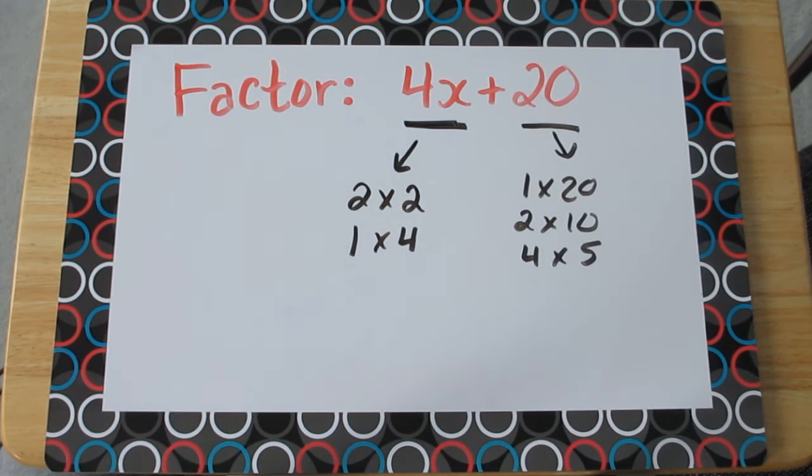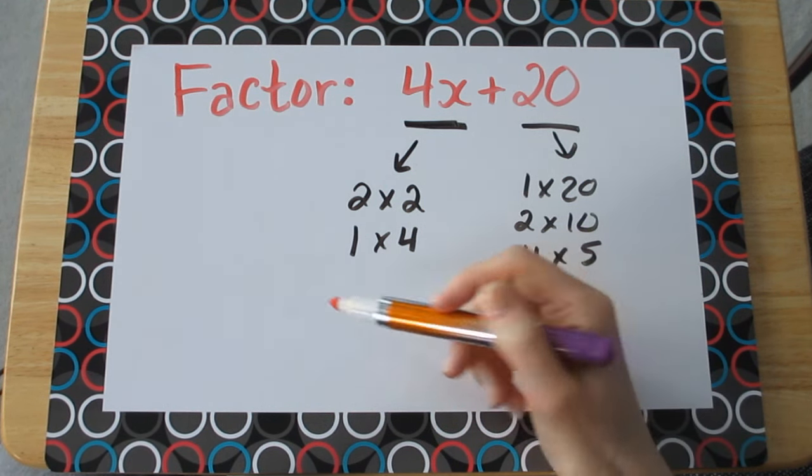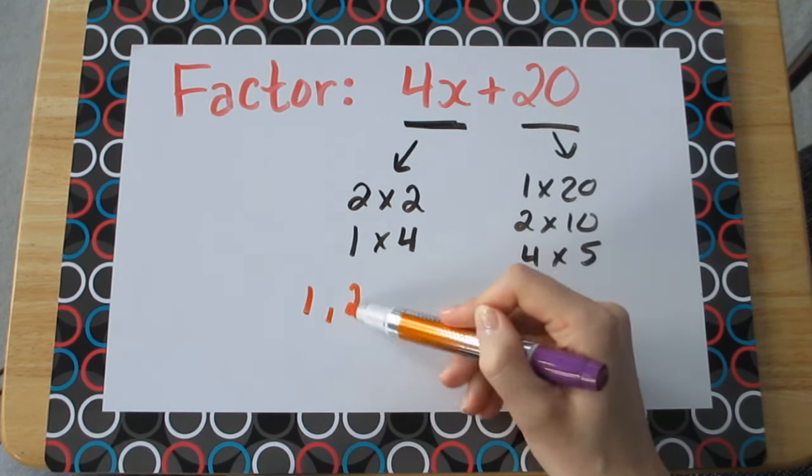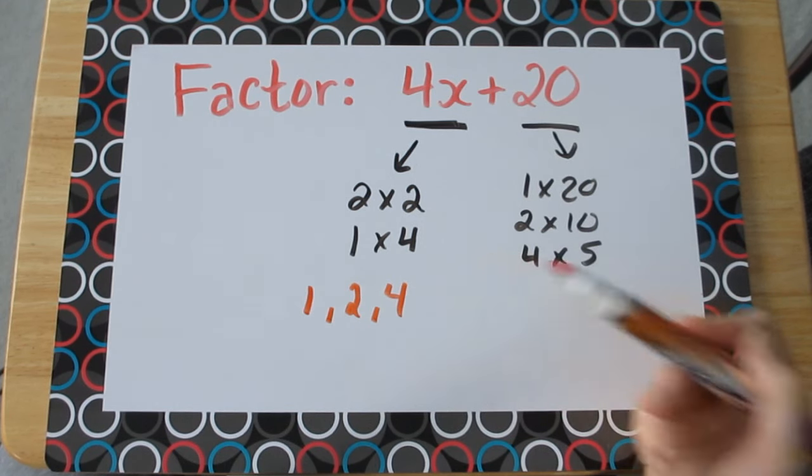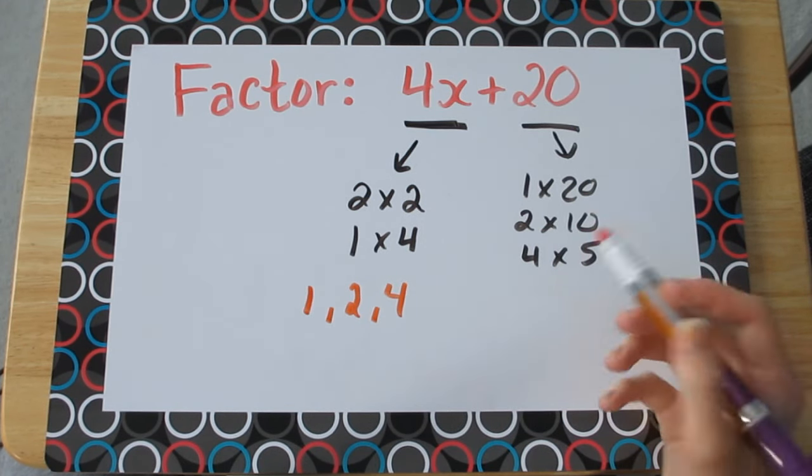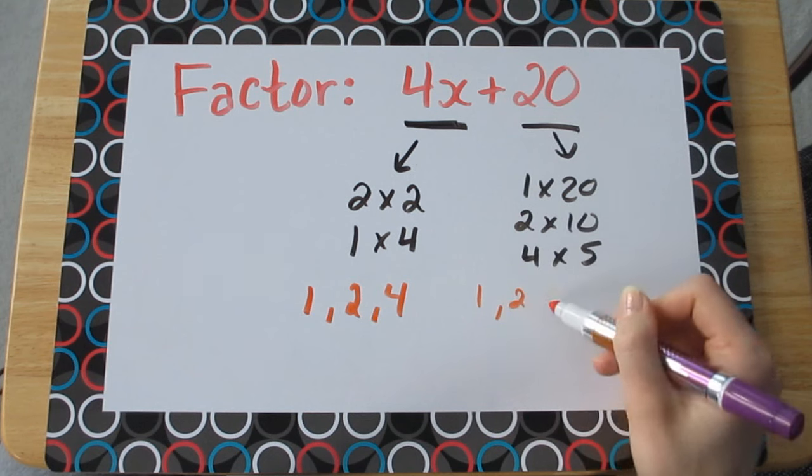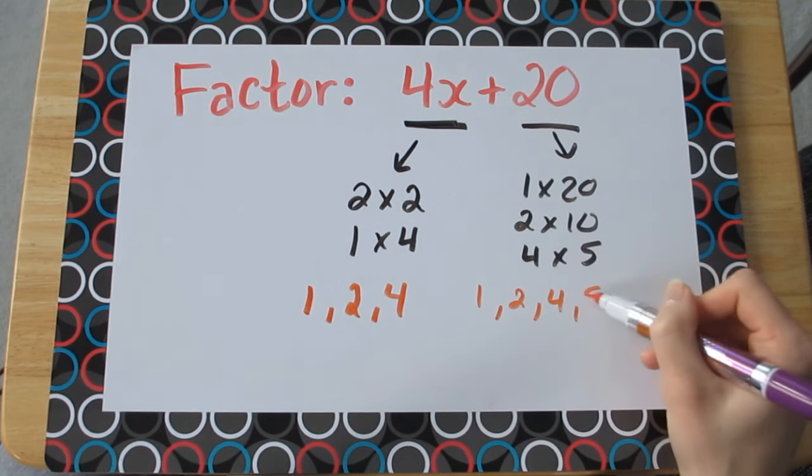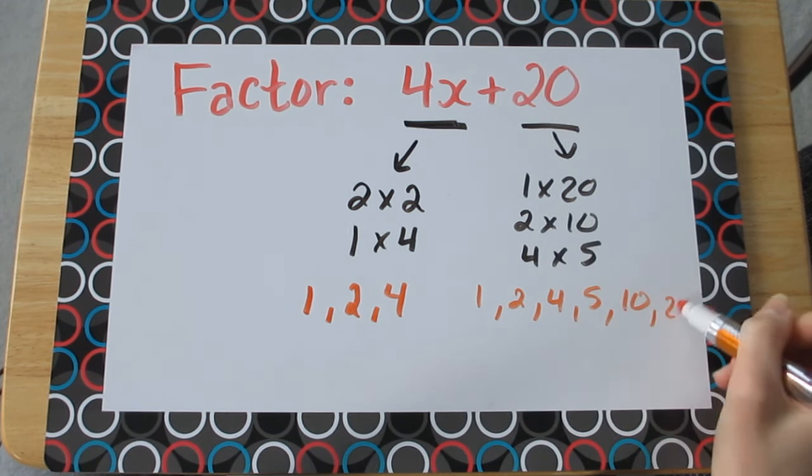Now with this list of numbers, we can put them all in order to figure out what our greatest common factor is. So for 4, we have the numbers 1, 2, and 4 as factors. For 20, we have the numbers 1, 2, 4, 5, 10, and 20.